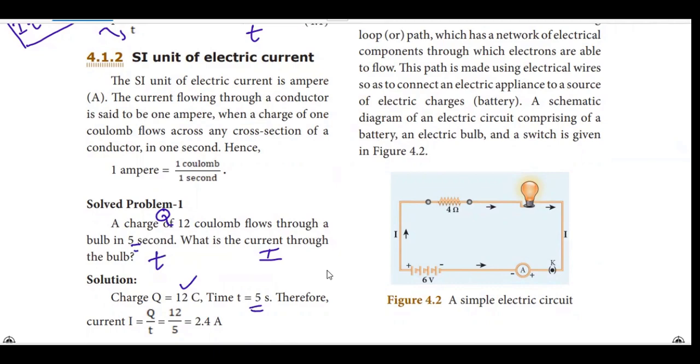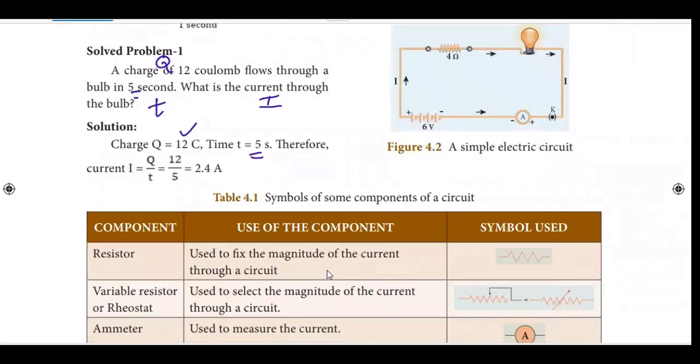Now, we have 2 known quantities: q and t. We have a formula. I is equal to q by t. Now, q is 12, that is the charge. Then, if we take a look at the time, 5. Then, 12 by 5.